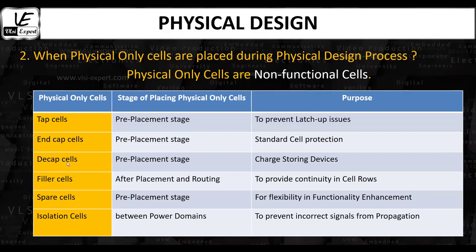The next physical only cell is the decap cell. Decap cells, short for decoupling capacitors, are charge-storing devices made up of capacitors. They serve to support the instant current requirements in the power delivery network of a chip. When there is a sudden large current demand, such as during input transitions, decap cells provide the necessary charge to prevent voltage drop or ground bounce. Decap cells are typically placed after the power planning stage and before the standard cell placement, that is, at the pre-placement stage.